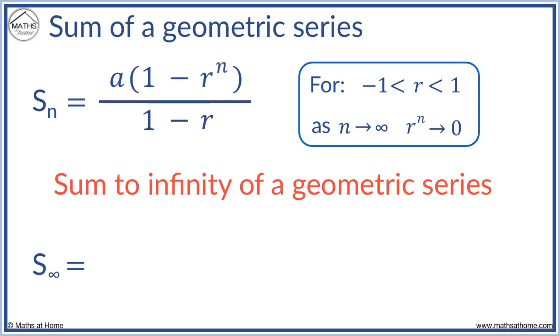And we said that r to the n tends to 0. This simplifies with 1 minus r still on the bottom. And on the top, 1 minus 0 equals 1, and multiplying this by a, we just get a.